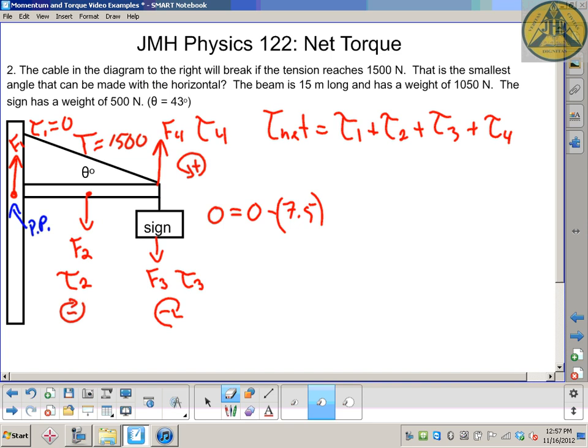Okay, let's stick to the same color. So 7.5 times the force. The force that's acting there is the weight of the beam, 1050, minus torque three, which is the distance from the end, which is 15. Its weight is 500, and plus 15 meters times F4. So the tension in the cable is pulling upwards, and it's 15 meters from our pivot point.